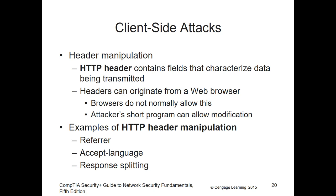Other types of client-side attacks are header manipulation — being able to manipulate the HTTP header. The header will contain fields that characterize what's being transmitted. The header can originate from a web browser, though browsers do not normally allow this. Some browsers, especially if they're out of date, may allow modification through an attacker's short program. It kind of goes back to what browser and what version of the browser you're using. Examples of header manipulation could be things like referral, accept languages, or response splitting.